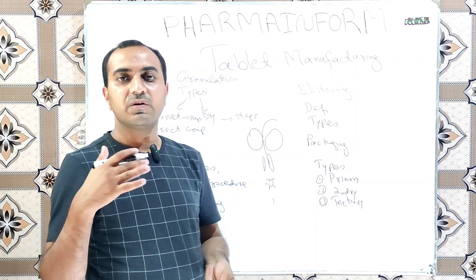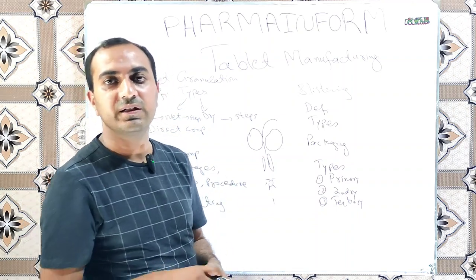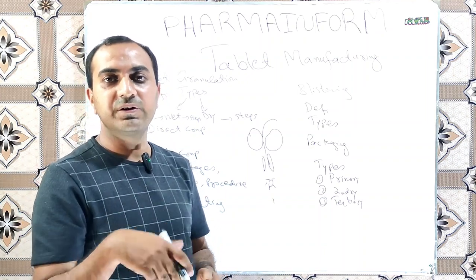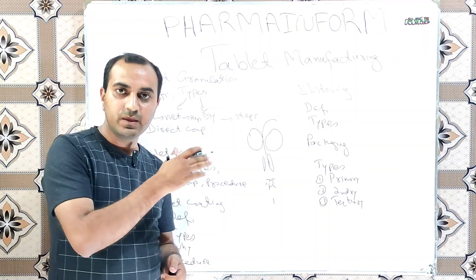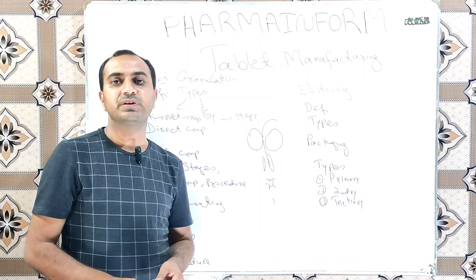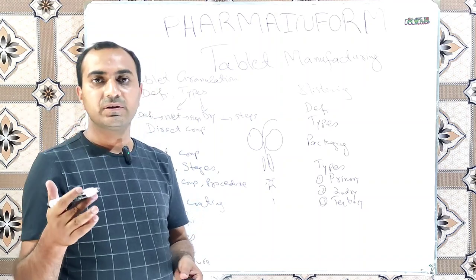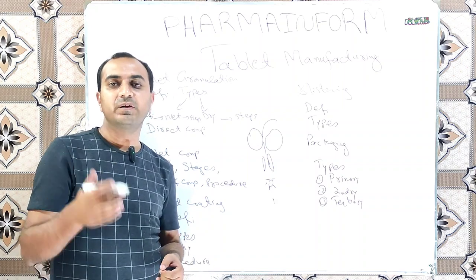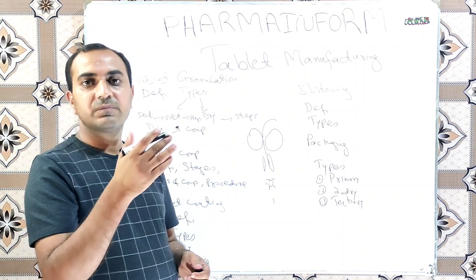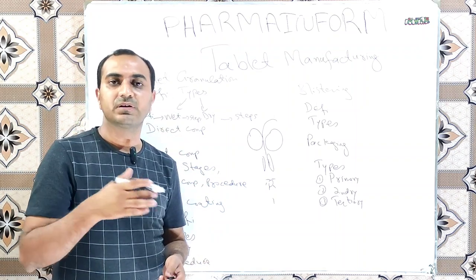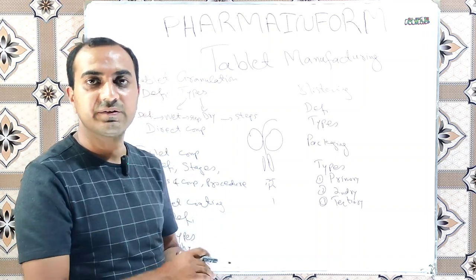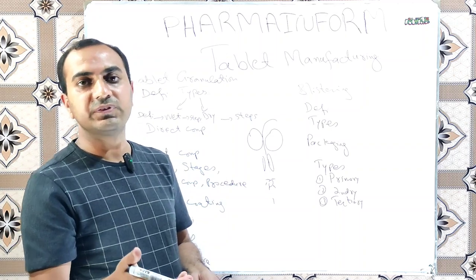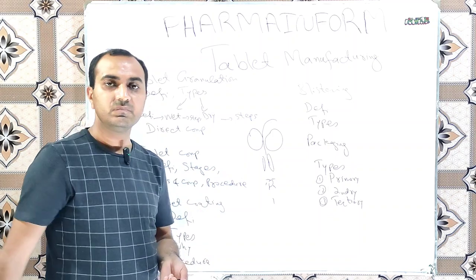In single feed, each punch forms one tablet during its complete revolution and has one hopper. In double feed compression machines, each punch compresses two tablets when it completes its round and has two hoppers. The main parts of compression machines are: turret, upper punches, lower punches, die table, dies, main compression wheels or rollers, pre-compression rollers, feeders, hoppers, weight controllers, cam system or punch guiding tracks, weight adjustment cams, and tail over die.